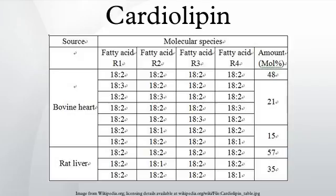Cardiolipin is a kind of diphosphatidyl glycerol lipid. Two phosphatidic acid moieties connect with the glycerol backbone in the center to form a dimeric structure. It has four acyl groups and potentially carries two negative charges. As there are four distinct acyl chains in cardiolipin, the potential for complexity of this molecule species is enormous.